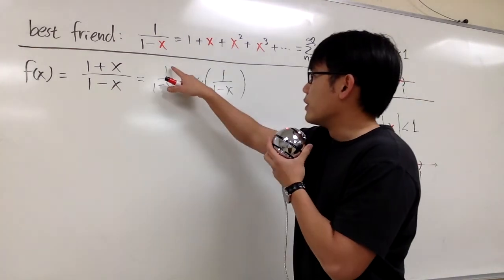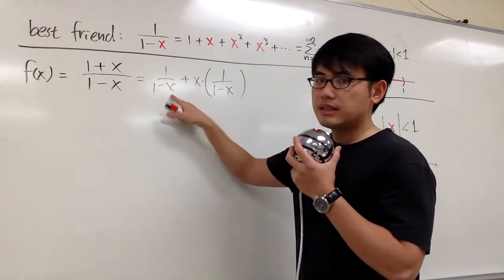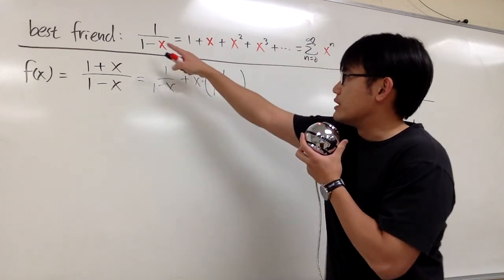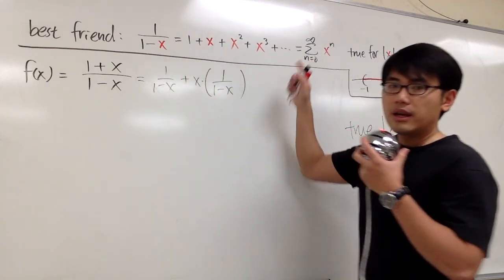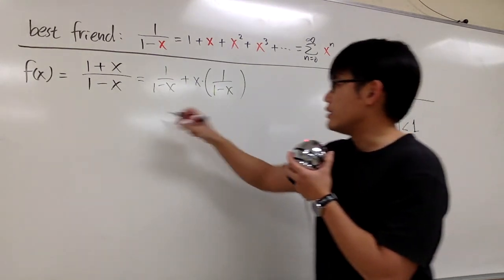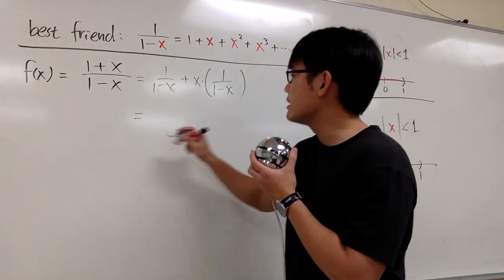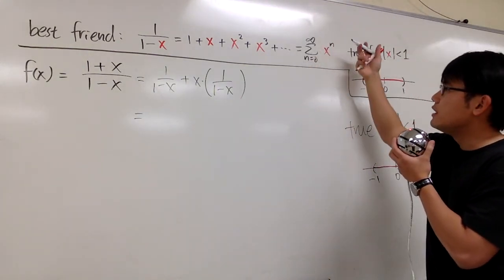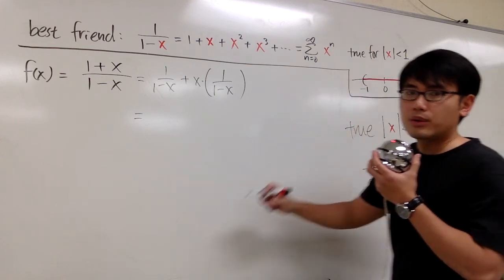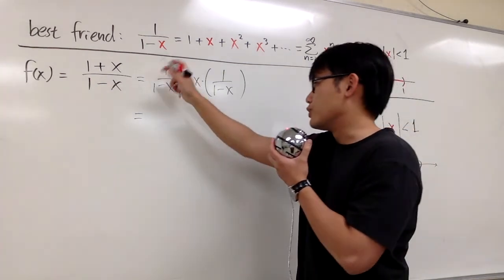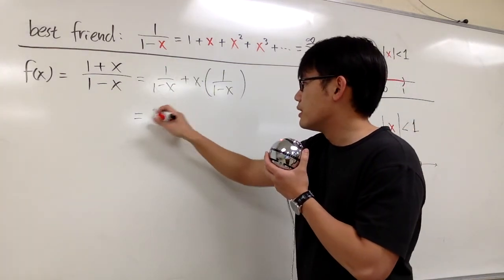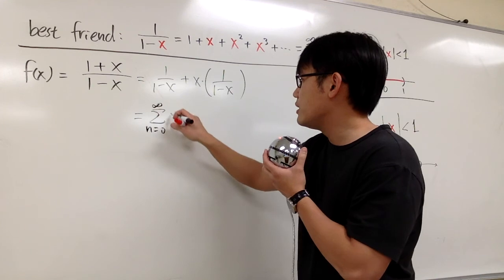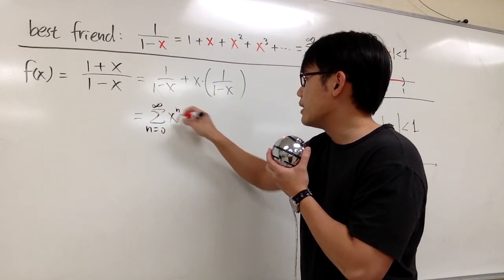For the 1/(1-x), this is exactly the same as our best friend — I can just write this down as sigma when n goes from 0 to infinity, x to the n power.